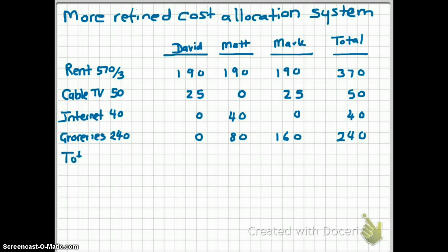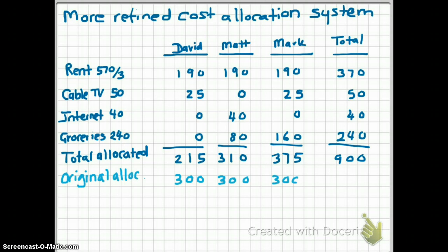Now, if you total up all their costs, it will show exactly what each person will end up paying. David will pay $215, Matt will pay $310, Mark will pay $375, and for a total of $900.